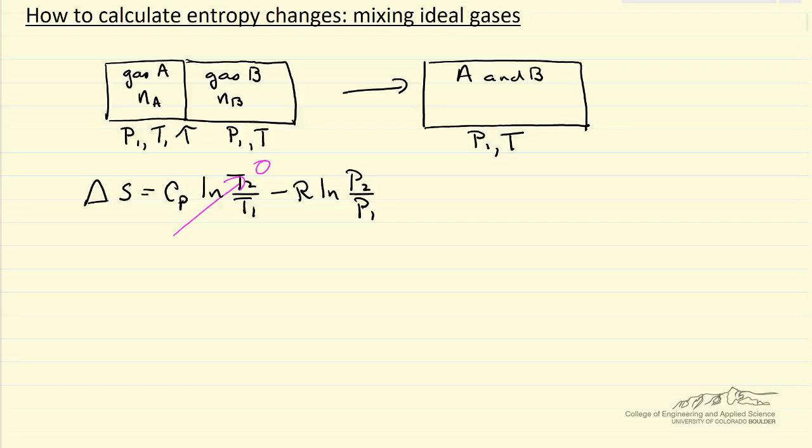But if we treat each gas independently, then we start out at pressure P1 and end up with a final pressure that's lower. And this is the reason the entropy increases, we've lowered the pressure of each of the gases.